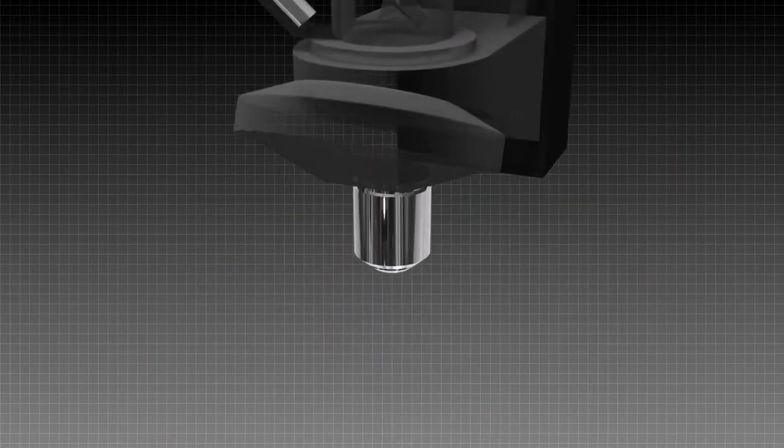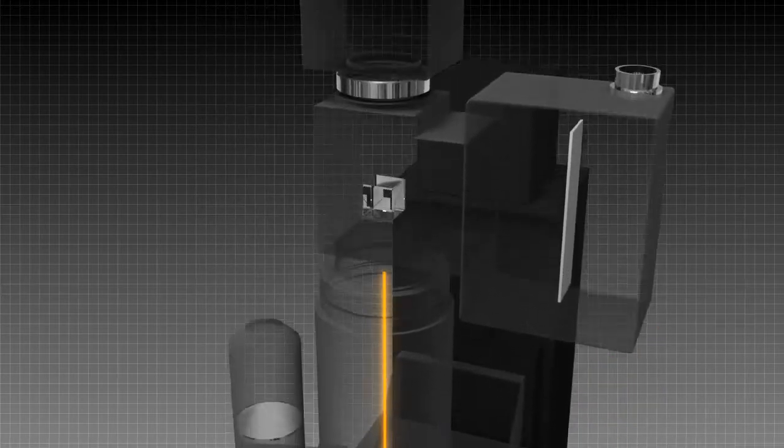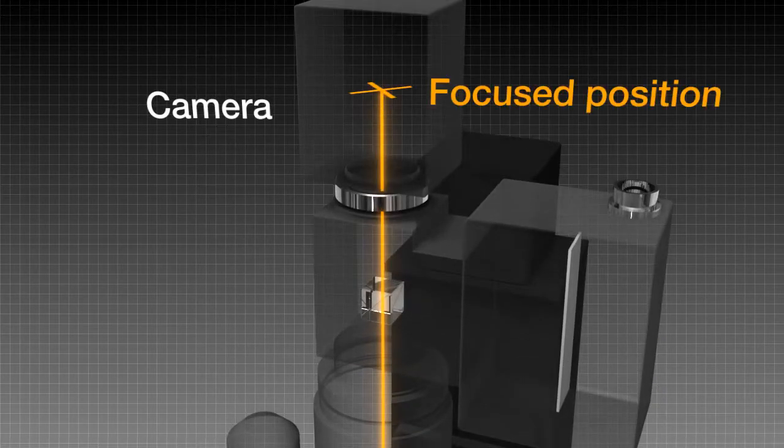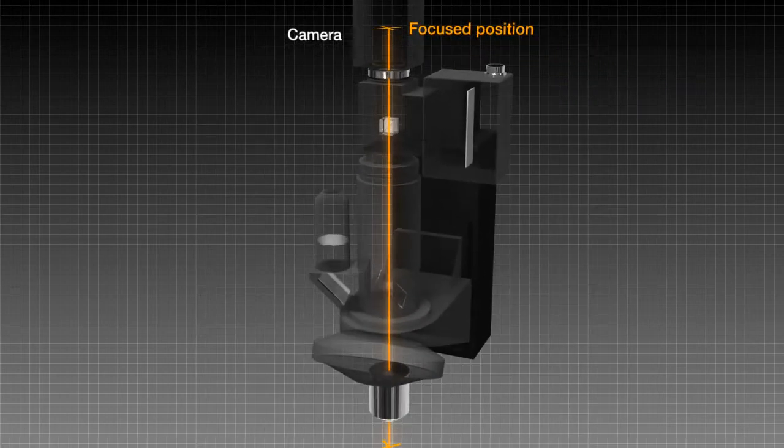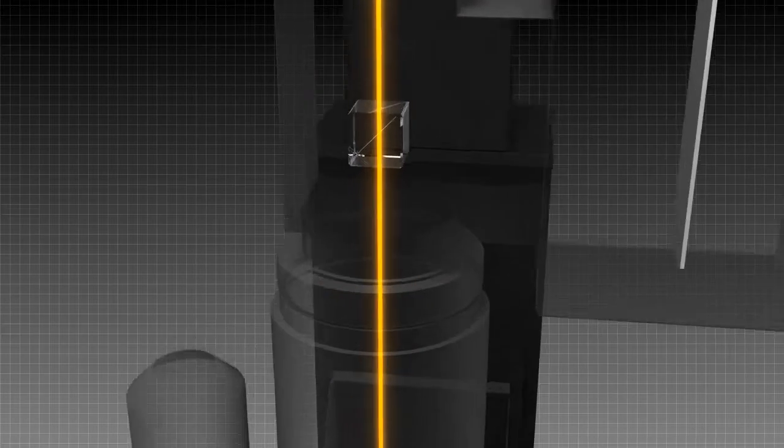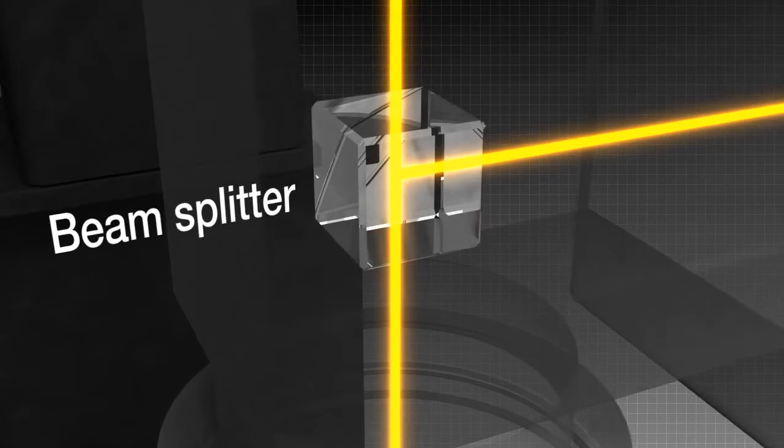First, when the objective lens focuses on the target object, it sends the image to an imager, such as a CCD camera. The signal used for autofocusing is split off towards the line sensor from the video signal by means of a beam splitter located just before the camera input.